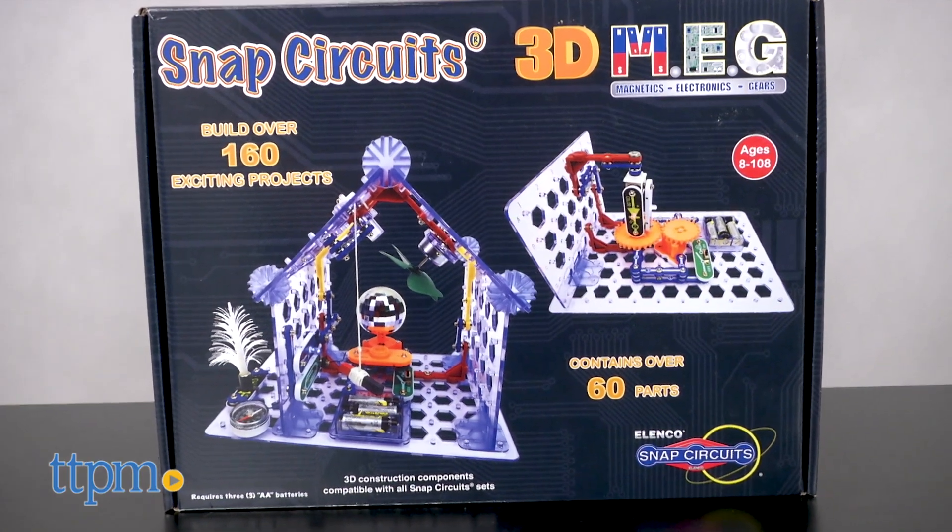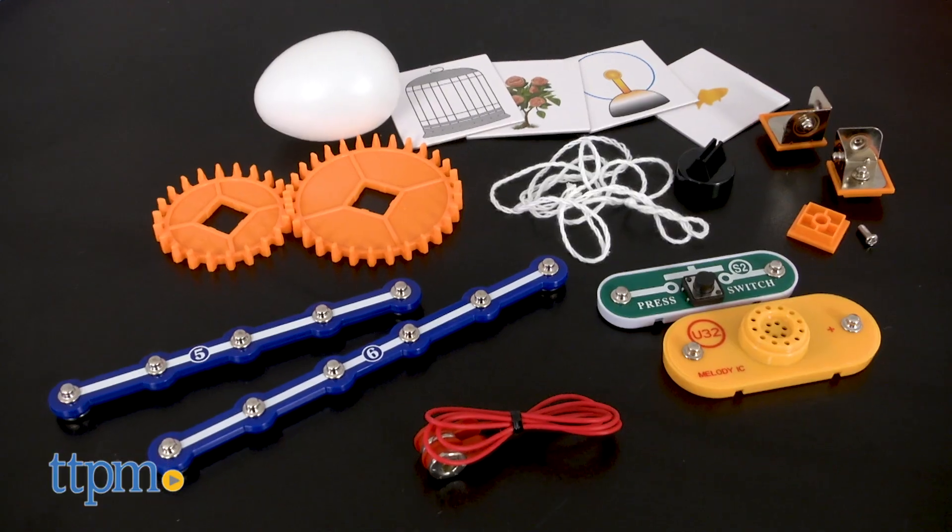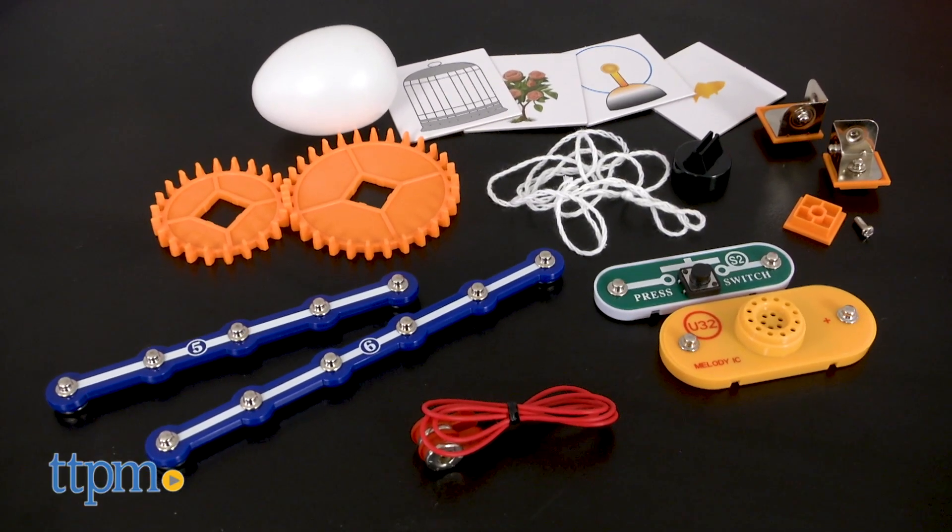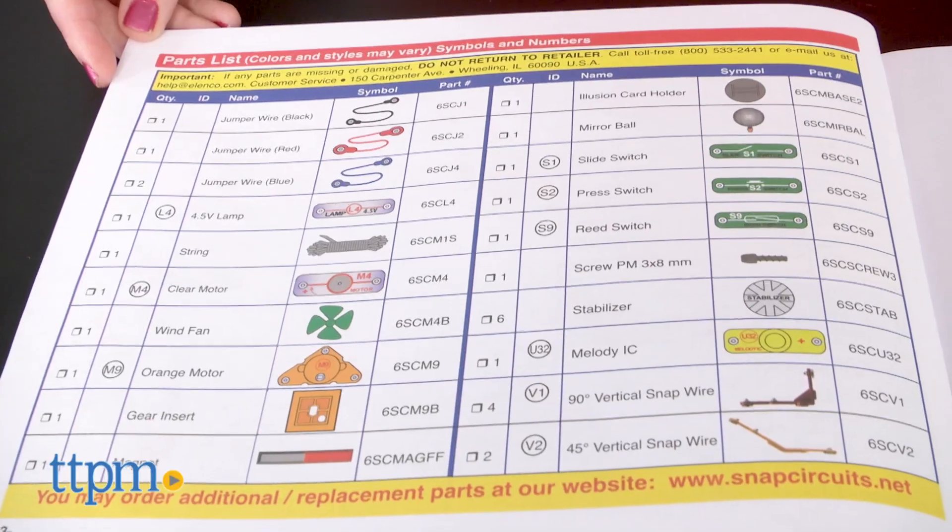The letters MEG stand for magnetics, electronics, and gears. All things kids work with as they build more than 160 projects using the 60 parts included in the kit.